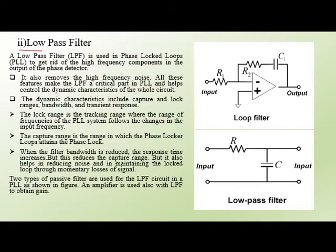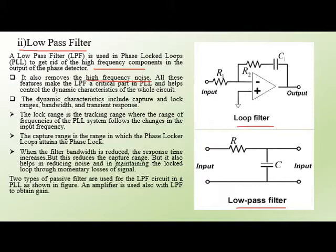The second PLL component is the low pass filter. The low pass filter used in the PLL is to get rid of the high frequency components in the output of the phase detector. Two filter configurations are used: one with an op-amp with resistor components, and another with only resistor and capacitor. The low pass filter also removes high frequency noise and is a critical part of the PLL that controls the dynamic characteristics of the whole circuit.